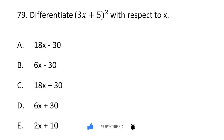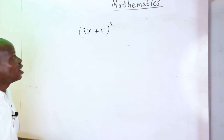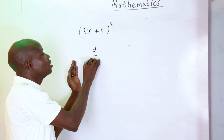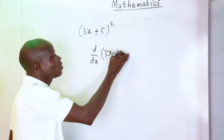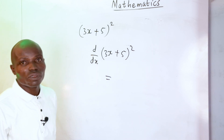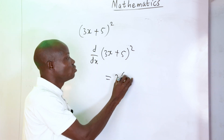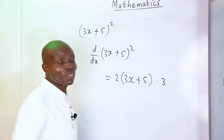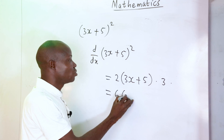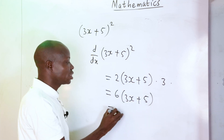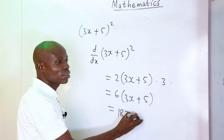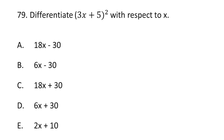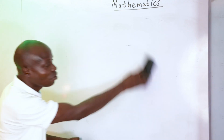Question 79: differentiate (3x plus 5) squared with respect to x. Using the chain rule: 2 times (3x plus 5) times 3, giving 6(3x plus 5), which equals 18x plus 30. That matches option C.